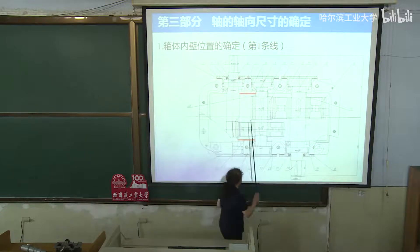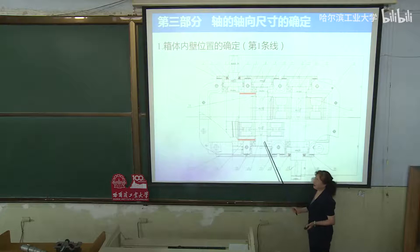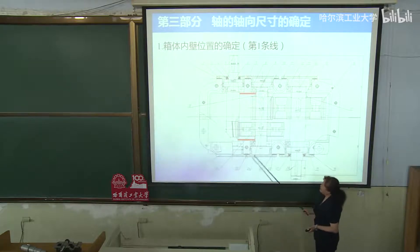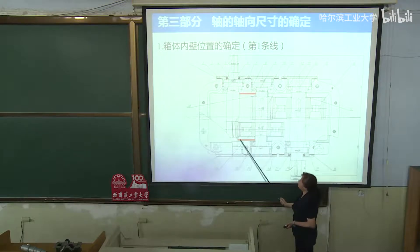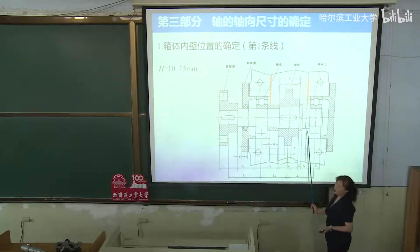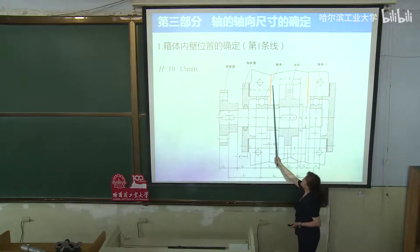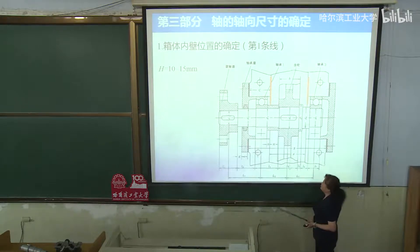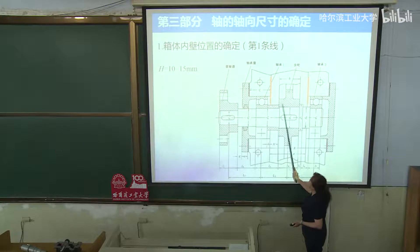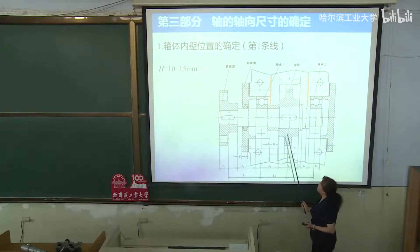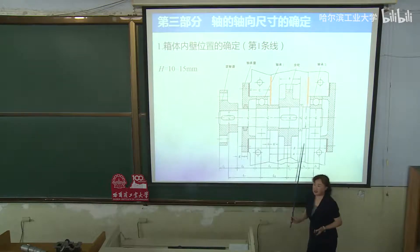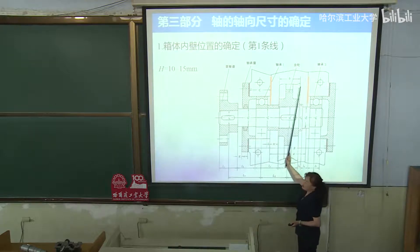前面把轴的径向尺寸介绍完了，下面介绍轴的轴向尺寸确定，讲四条线。四条线定清楚了，轴的轴向尺寸就都确定正确了。首先看第一条线：箱体内壁线。怎么确定？先画出齿轮，注意齿轮的轮缘和轮毂宽度不一定一样，轮缘根据设计参数得到，轮毂根据固定定位要求来。